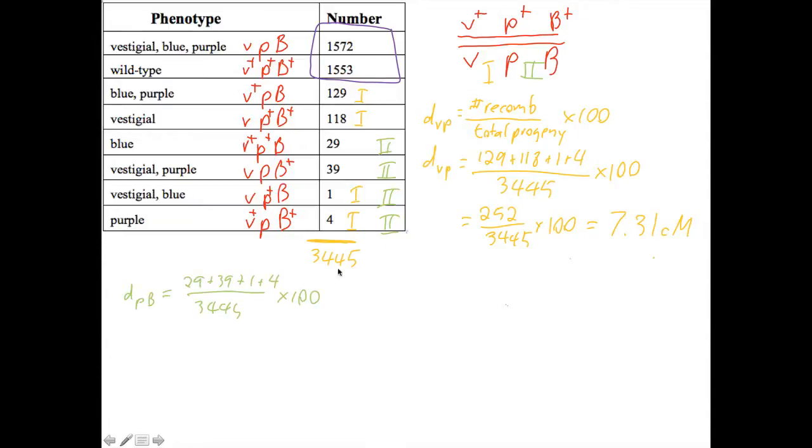Let's look at region two. We're going to put in all the crossover in region two up here. So 29, 39, 1, and 4. You see them there. We do the math. We get 2.12 centimorgans.